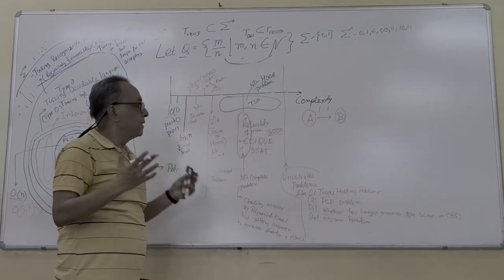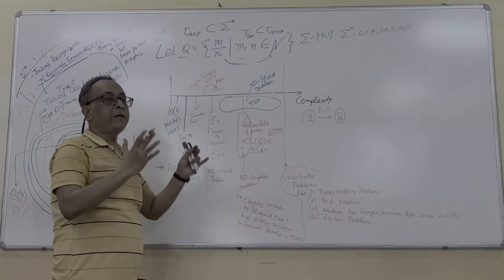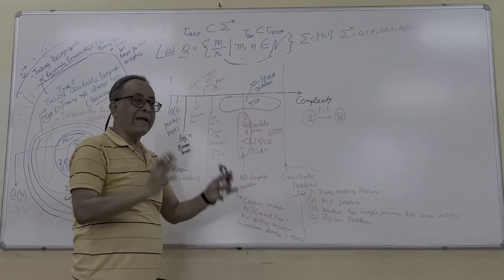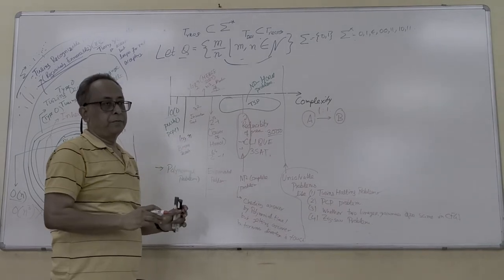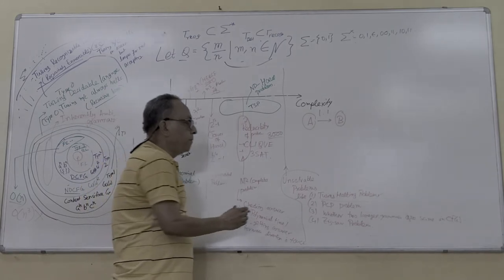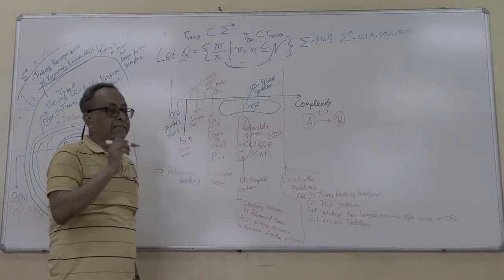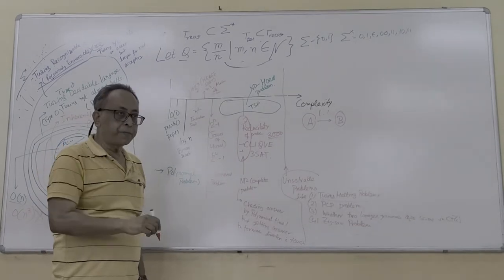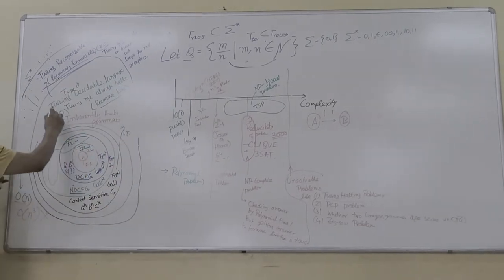The halting problem is, you cannot test a program by giving it to a Turing machine and guarantee it will always stop. It might halt, it might not halt. Remember, a Turing machine halts for both cases: accepted status and also rejected status.